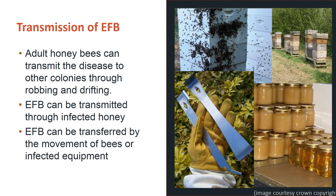Because adult bees can carry the bacteria, they can transmit the disease to other colonies through drifting or robbing. As shown previously, EFB can be found in honey, so a hive can be infected through access to infected honey. Also, the bacteria can be transferred by beekeepers if infected equipment has not been properly cleaned.